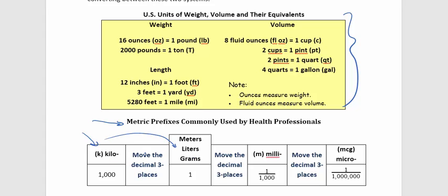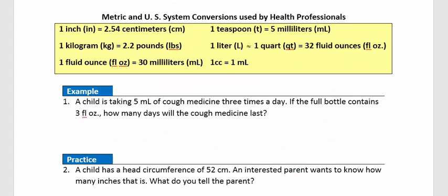When converting from kilo — for example, kilograms to grams — we move the decimal three places. Another common one: going from the base unit to milli is another three decimal places, and then micro for measuring very small amounts is another three decimal places. It's very convenient that between the most common measurements used in health professions, all decimal movements are three places either left or right depending on which direction we're converting. Common metric and US system conversions: one inch equals 2.54 centimeters.